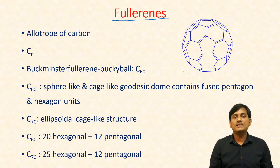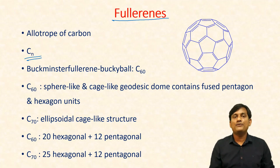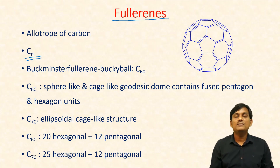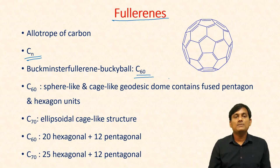We know that fullerenes are one of the allotropic forms of carbon. The general formula of fullerenes is Cₙ, where N indicates the number of carbons. The most famous fullerene is Buckminster Fullerene, also called the Buckyball structure, with the formula C60.